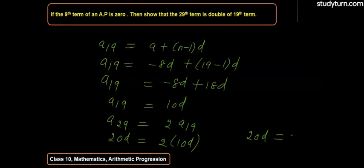And a_29 = 20d, which equals 2(10d) = 2a_19. This proves the 29th term is double the 19th term. Thank you for watching, please subscribe to our channel.